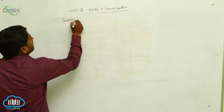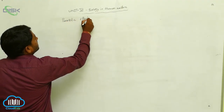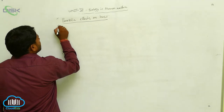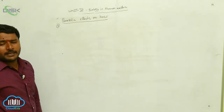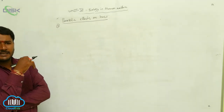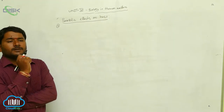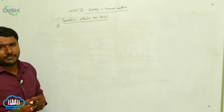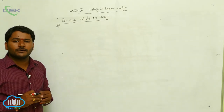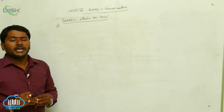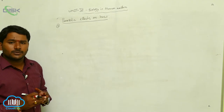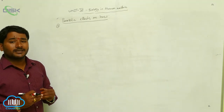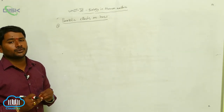Parasitic effects on host. When we define a parasite, a parasite is a harmful organism which lives inside the host at the cost of host life. The parasite damages host organs, host tissues, and host body fluids — it feeds upon the host. So the host is severely injured or affected.